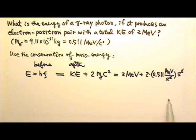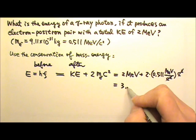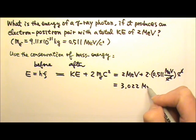And this is only the mass part. So I have to multiply that by c squared. And look what happens to the c squared. They cancel. And this will give me 3.022 MeV.